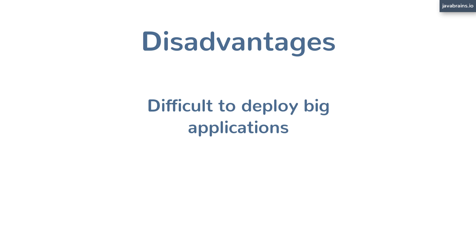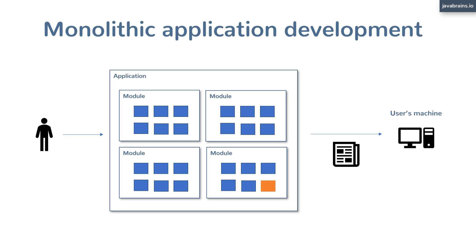First, the bigger the deployment, the more challenging the deployment. For example, let's say you want to push a new feature to your big monolithic application, and among all the code commits is one from a new developer you're not so sure about. You need to test the whole application before you deploy — you never know which part that commit might have broken. Since the whole application is being deployed every time, you need to test the whole application every time you deploy, because anything in it could have a bug introduced.